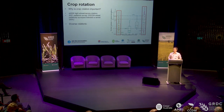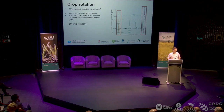What do diverse rotations give us? They reduce the environment a susceptible host goes into, giving a chance to break down the inoculum prior to returning to a susceptible host. This in turn limits yield loss, reduces our reliance on fungicides, and puts less pressure on our fungicide modes of action. And further to that, there are even bigger rotational advantages beyond what I've discussed.